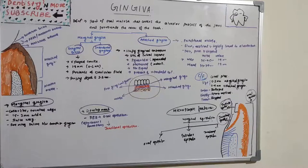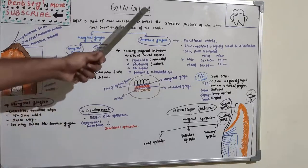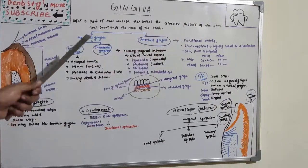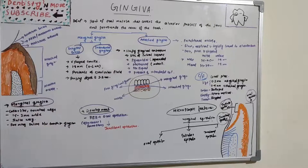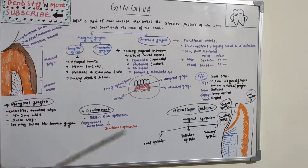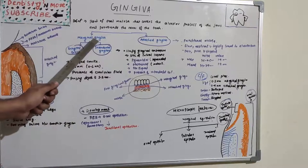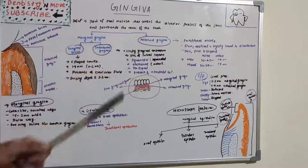As per definition, gingiva is a part of oral mucosa that covers the alveolar process of jaws and surrounds the neck of the teeth. It is a covering of alveolar bones and surrounds the neck of teeth. It has got basically two parts: marginal gingiva and attached gingiva.